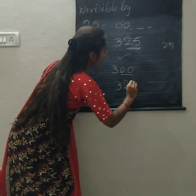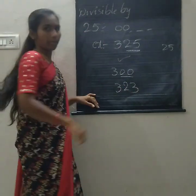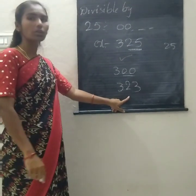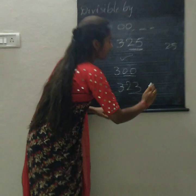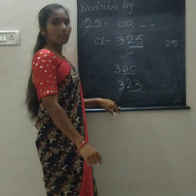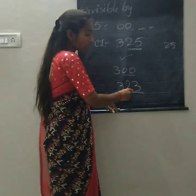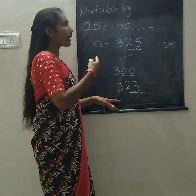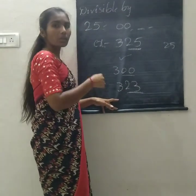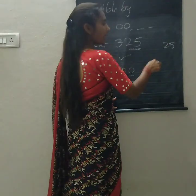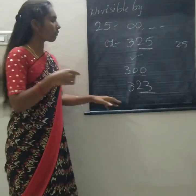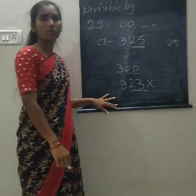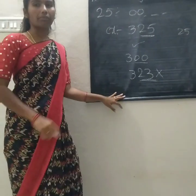Next I am taking 323. Is this divisible by 25? Check the last 2 digits: 23. Is 23 divisible by 25? No. 23 is a very small number compared to 25, so 323 is not divisible by 25.